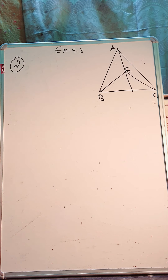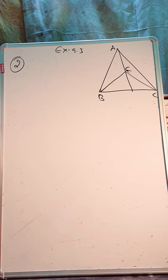Question number 2. In triangle ABC, E is the midpoint of median AD. Show that area of BED equals 1/4 of area of ABC. We are going to prove this.